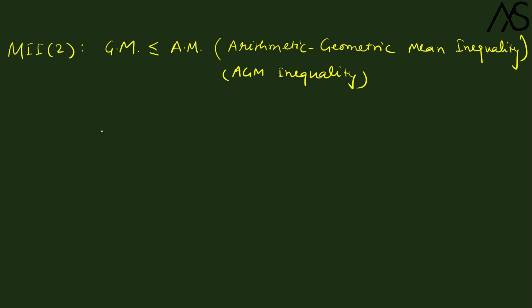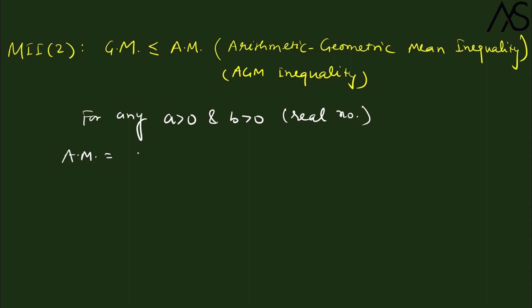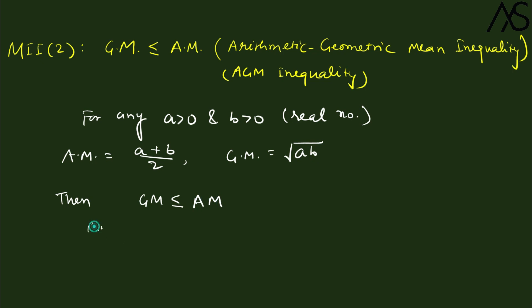As the inequality states, the geometric mean cannot exceed the arithmetic mean. For any positive real numbers A and B, the arithmetic mean (AM) is defined as (a + b) / 2, and the geometric mean (GM) is equal to √(ab). The inequality says GM is always less than or equal to AM, that is: √(ab) ≤ (a + b) / 2.